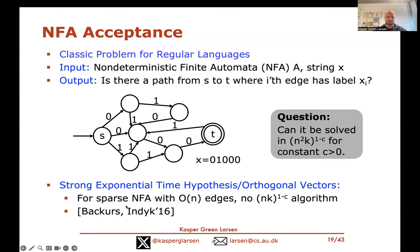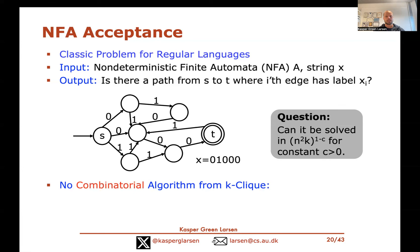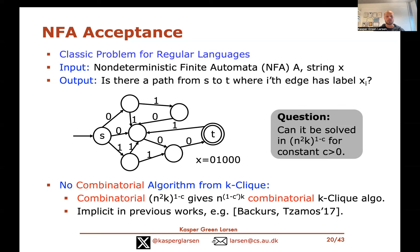One can also show that probably there's no fast combinatorial algorithm for this problem. 'Combinatorial' here informally means not using fast matrix multiplication tricks. Specifically, a combinatorial algorithm for NFA acceptance beating O(n² · k) would imply a combinatorial algorithm for the k-clique problem beating O(n^k) time, which is generally conjectured impossible. This reduction is implicit in previous works, among others in Backurs and Sommer from 2017.